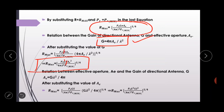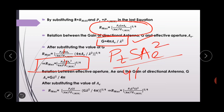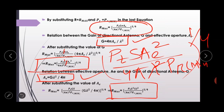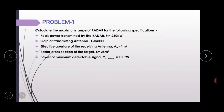यहाँ पर G गलती से लिखा गया — जब हम G का value substitute करते हैं तो G चला जाता है। Final equation होगा: Rmax = [PT × S × AE² / (4π × λ² × PRmin)]^(1/4). We can also use the relation AE = Gλ² / 4π. इन तीन equations को use करके — standard equation, G substituted, और AE substituted — हम different problems solve कर सकते हैं।